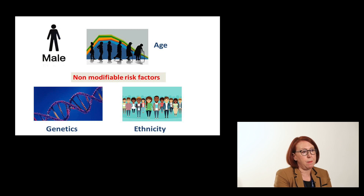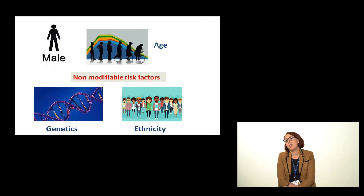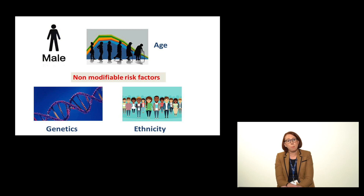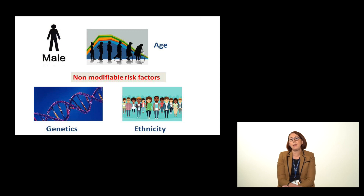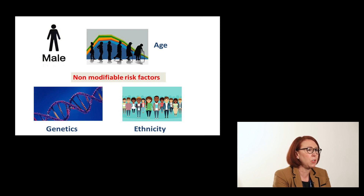Firstly there are non-modifiable risk factors — these unfortunately are risk factors you can do nothing about. If you're male, if you're of certain ethnicities such as South Asian descent, if you're older, and some people have a genetic predisposition, particularly if it's in their family — in their father before they were 55 or in their mother before they were 65 — that tends to mean the offspring or the children are at an increased risk for genetic reasons. There's no specific genetic test we can do to check for this. It's important just to treat the heart disease as we treat all the other cases.